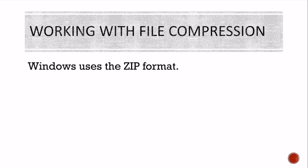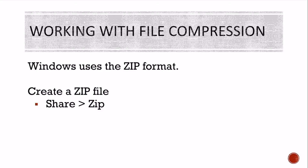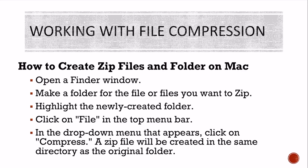Working with compression: on a Windows machine they use the ZIP format. You create a ZIP file, send it, and open it up — it's really easy. You pick your file, choose Share, choose ZIP, and it condenses it for you. When you work on a Mac, it's just as easy. You open your Finder window, make a folder for the file or files so you can put a number of them in one folder, then select that folder, click File at the top, use the drop-down menu and choose Compress. A ZIP file will be created in the same directory as the original folder, and then you send that ZIP file and the recipient will be able to open it.